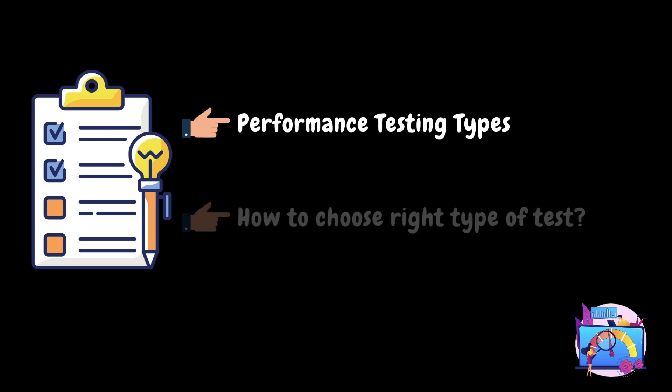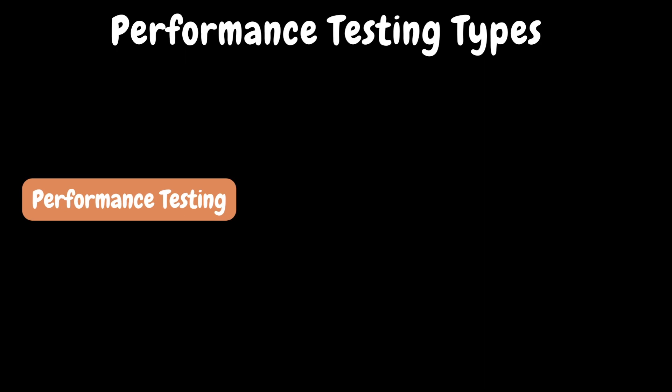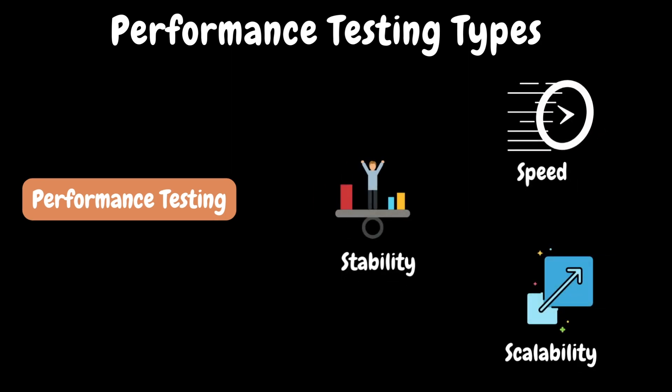Let's begin the performance testing types topic. Before discussing this any further, let's quickly recap the performance testing definition. It is a type of non-functional testing that focuses on evaluating the speed, stability and scalability of a software application or system under various conditions in a production-like environment. Performance testing mainly focuses on evaluating the speed, stability and scalability factors, with the help of different performance test executions.